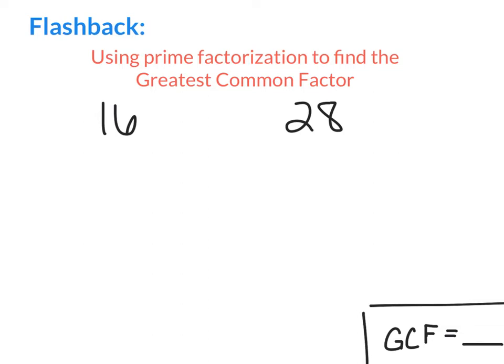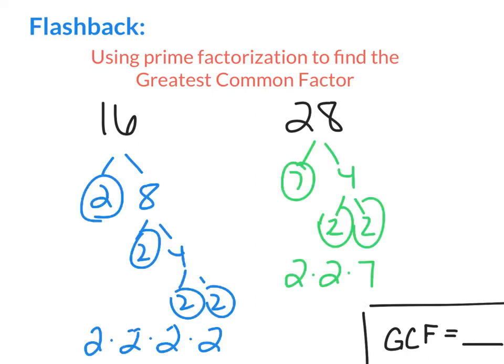You should have a note sheet in front of you. Go ahead and fill out the prime factorization for both 16 and 28, and then hit play to see if your answer matches mine. If you take a look at my prime factorization for 16 and for 28, I get 2 times 2 times 2 times 2 for 16, and 2 times 2 times 7 for 28.